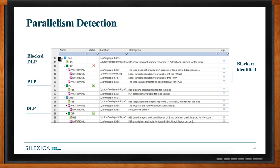In a deeper parallelism detection example, the tool identifies DLP — data level parallelism — and PLP — pipeline level parallelism. In the status column, a green checkmark indicates the parallelism is actually implementable, while a red X means it is blocked. For instance, a loop carry dependency can block parallelism, and the tool shows you specifically which variables are responsible. This creates an opportunity to refactor your code to unlock more parallelism and get better performance or a better performance-per-area tradeoff.